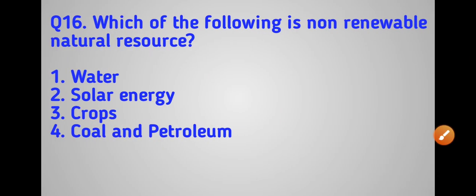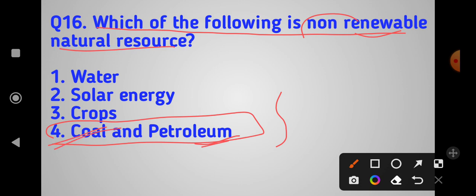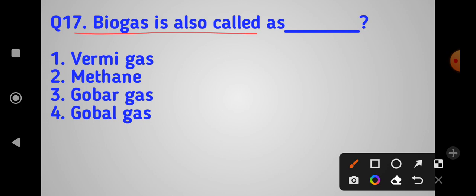Which of the following is a non-renewable natural resource? Non-renewable means it cannot be renewed or replenished once used. The answer is coal and petroleum - these are non-renewable resources.